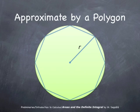In this case, the regular shape that we use is a regular polygon. We approximate the disk of radius r by a regular polygon as shown in this picture.